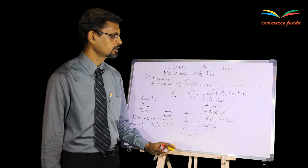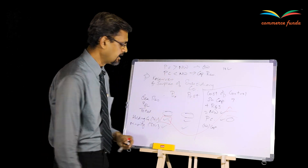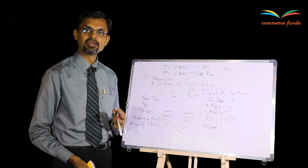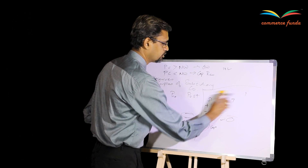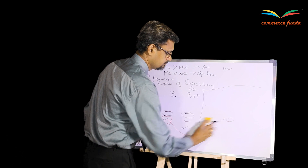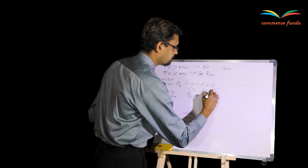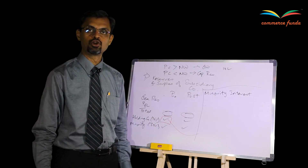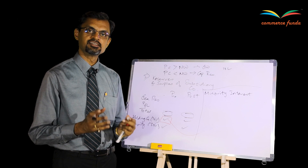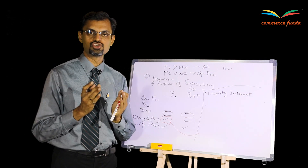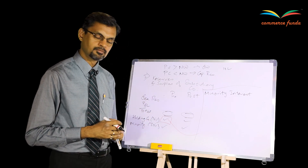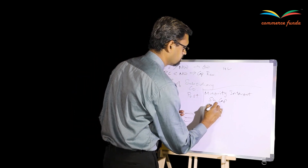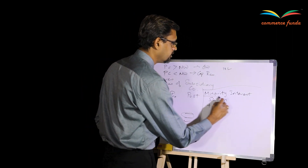The third working note is very simple once you understand the second. The third working note is for calculation of minority interest. Minority interest is nothing but the overall net worth of the minority shareholders in the subsidiary company. The formula is the same: share capital plus reserves and surplus. When calculating minority interest, the share capital will be only the portion belonging to the minorities.